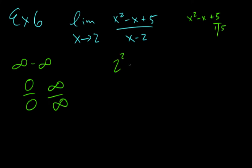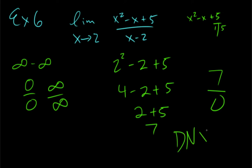I'm going to get two squared minus two plus five, four minus two plus five, two plus five is seven. We have seven over zero. So I actually did need to test that top. Sorry about that. But we know that the limit does not exist, because it's not in indeterminate form. It just happens to have division by zero.